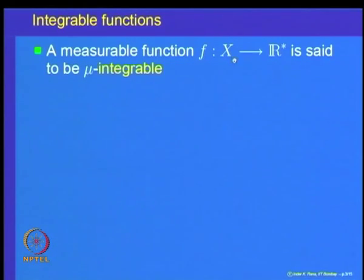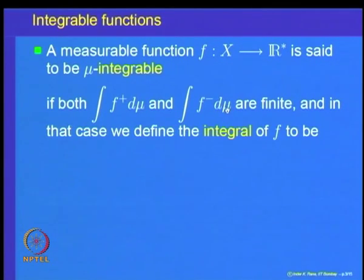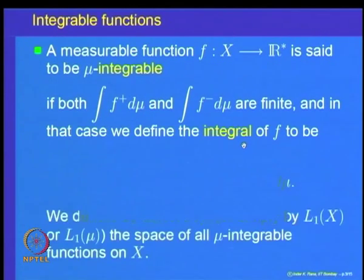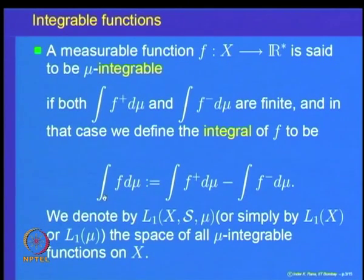Recall that a measurable function f on X — an extended real-valued measurable function f — is said to be integrable with respect to mu, written as mu-integrable, if both the integral of the positive part of the function and the integral of the negative part are finite. We say f is mu-integrable if integral of f-plus d-mu and integral of f-minus d-mu are both finite, and the integral of f equals the integral of f-plus minus the integral of f-minus.